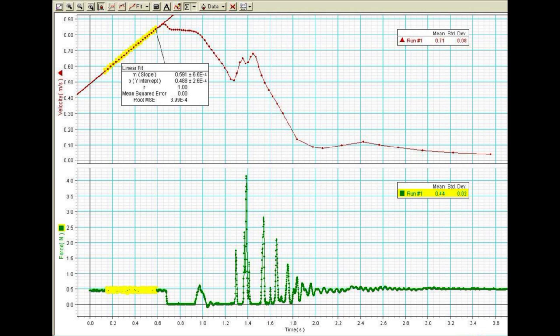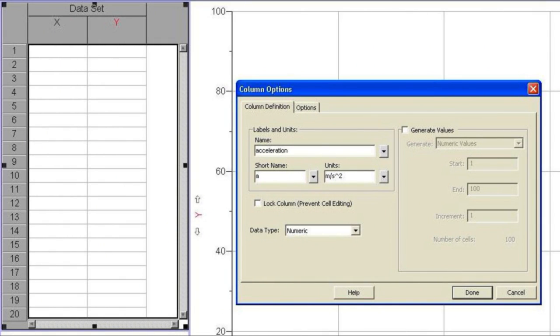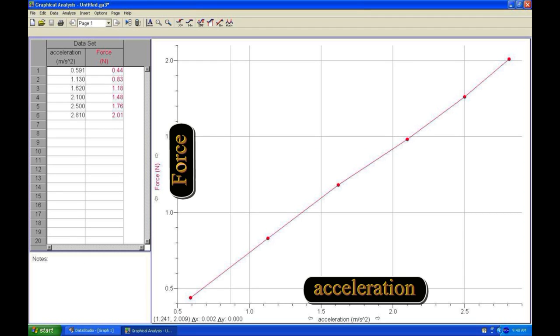We now wish to plot force on the y-axis versus acceleration on the x-axis. Open Graphical Analysis, which will soon become your favorite graphing program because of its ease of use, and double-click on the title at the top of the x column. Change the name of the x data to acceleration with units of meters per second squared. Similarly, change the name of the y-axis column data to force with units of newtons. Input the numbers you obtained from different accelerating weights.